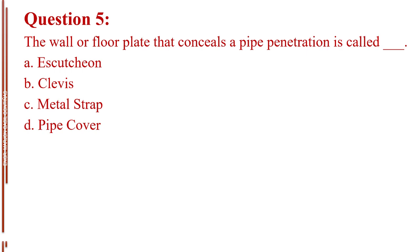Question number 5. The wall or floor plate that conceals a pipe penetration is called blank. Letter A, Escutcheon. Letter B, Clevis. Letter C, Metal Strap. Letter D, Pipe Cover. The answer is Letter A, Escutcheon.